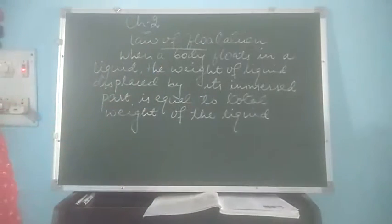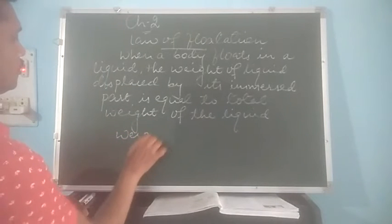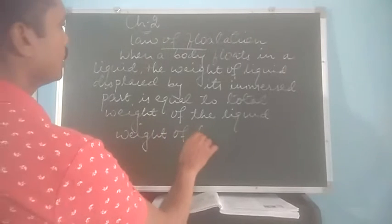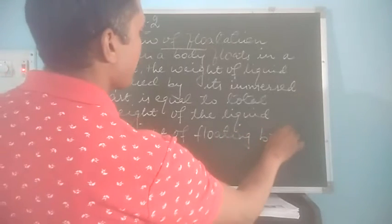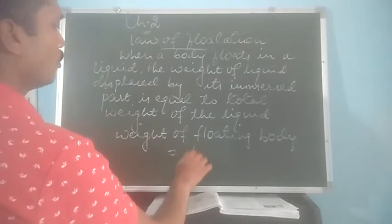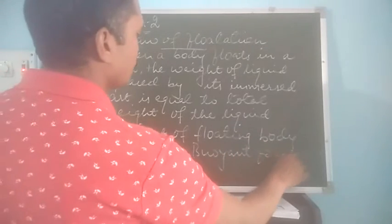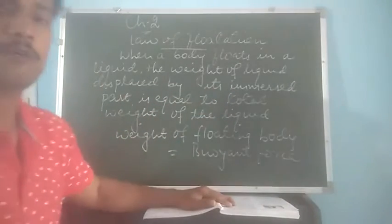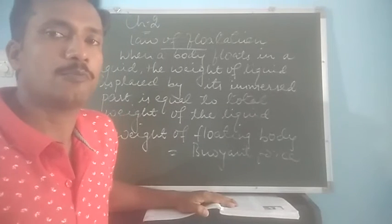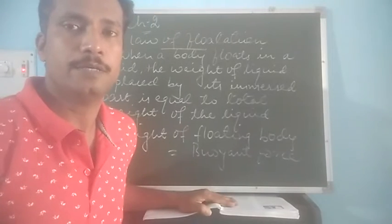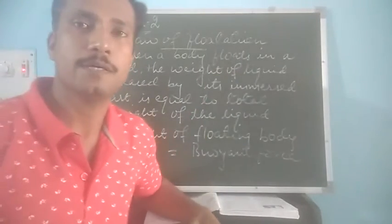This is called law of flotation. So we can write, weight of flotation body is equal to buoyant force. Because this weight of the immersed part of a liquid is only called the buoyant force. So what amount of buoyant force has been applied by the liquid on the object placed inside? It all depends upon the weight of the liquid displaced by the immersed part.